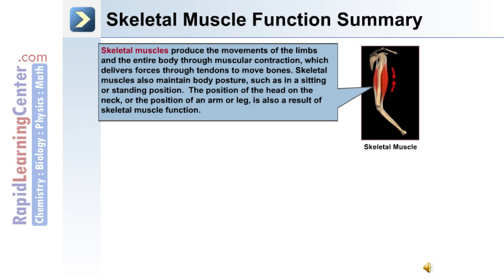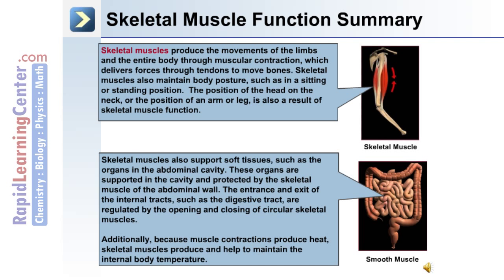Skeletal muscles produce the movements of the limbs and the entire body through muscular contraction, which delivers force through tendons to move bones. Skeletal muscles also maintain body posture, such as in a sitting or standing position. The position of the head on the neck or the position of an arm or leg is also a result of skeletal muscle function.